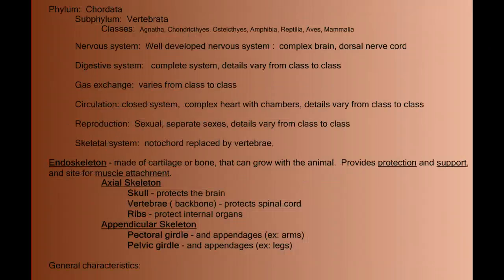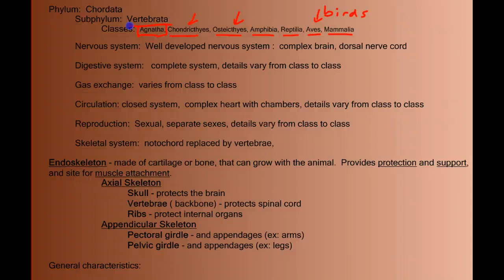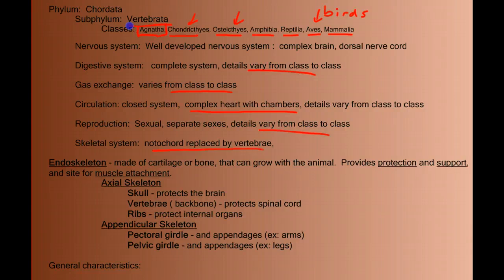That brings us to the subphylum Vertebrata — the chordates we're more familiar with. They include the class Agnatha, Chondrichthyes, Osteichthyes, Amphibia, Reptiles, Aves, and Mammals. Aves are birds, of course. Some names may not seem familiar — Agnatha will probably be new, but once we describe what Chondrichthyes and Osteichthyes are, it will become clear those animals are very familiar to us. The interesting part will be comparing how details change as we move from class to class. The key defining feature of the subphylum Vertebrata is the presence of vertebrae — the notochord is replaced by a backbone.